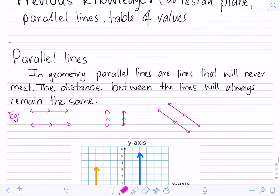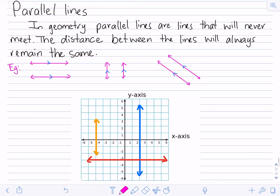So let's quickly go through what are parallel lines. In geometry we refer to parallel lines as lines that will never meet. They'll keep going until infinity and they'll never meet, and the distance between the lines will always remain the same. So some examples of those I've shown you here.